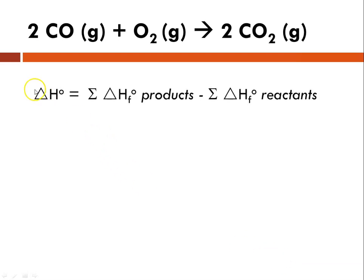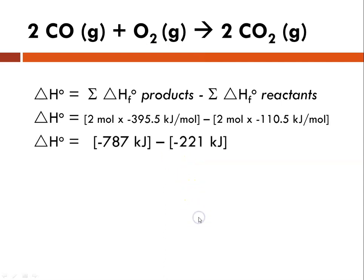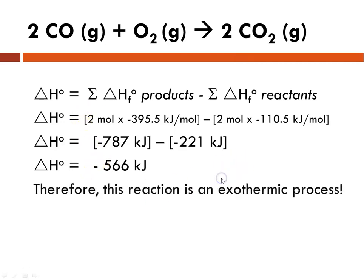Again, for this reaction using delta H equals the sum of the delta H of the products minus the sum of delta H's for the reactants, using Hess's law of summation, plugging in my numbers from my previous slide, I will get a delta H of negative 566 kilojoules. So that would be the overall delta H for this reaction. It is a negative number, indicating it is an exothermic process.